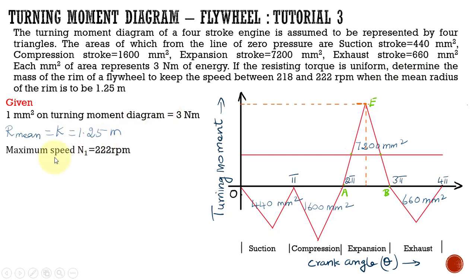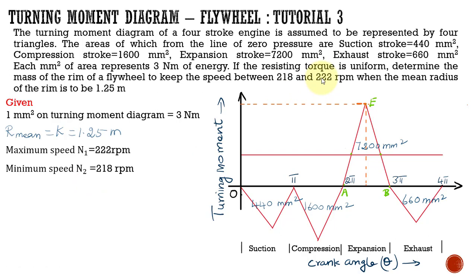The maximum speed is given as 222 RPM and the minimum speed is 218 RPM. By using these two data we can find out the coefficient of fluctuation of speed, because we are provided with this range. We are not directly given the coefficient of fluctuation of speed, so we are going to calculate it from the maximum and minimum speeds.